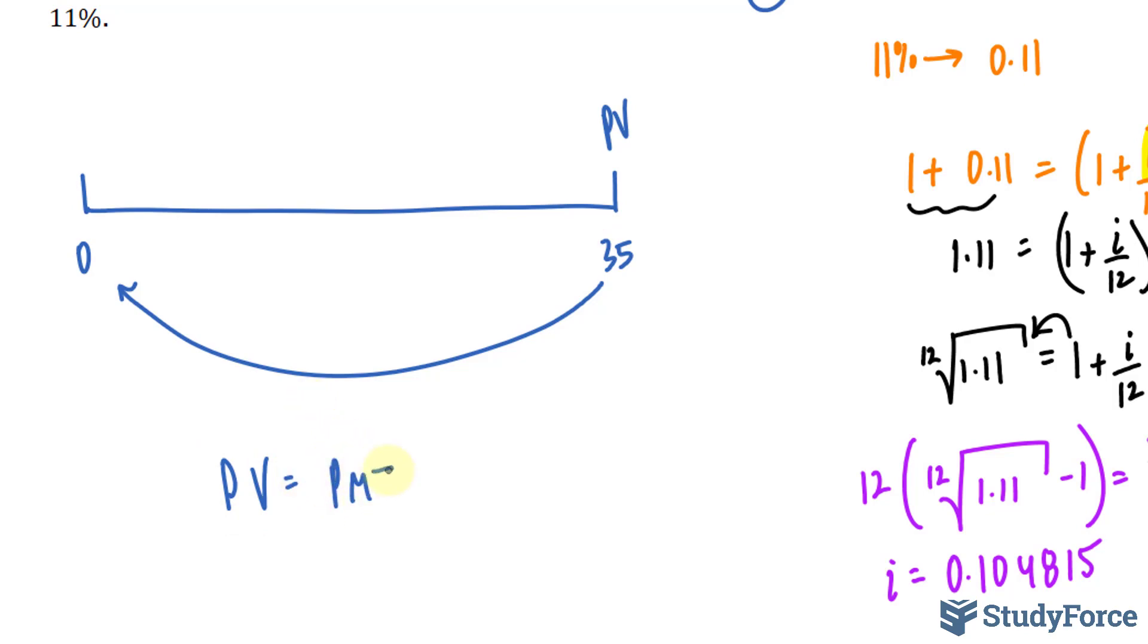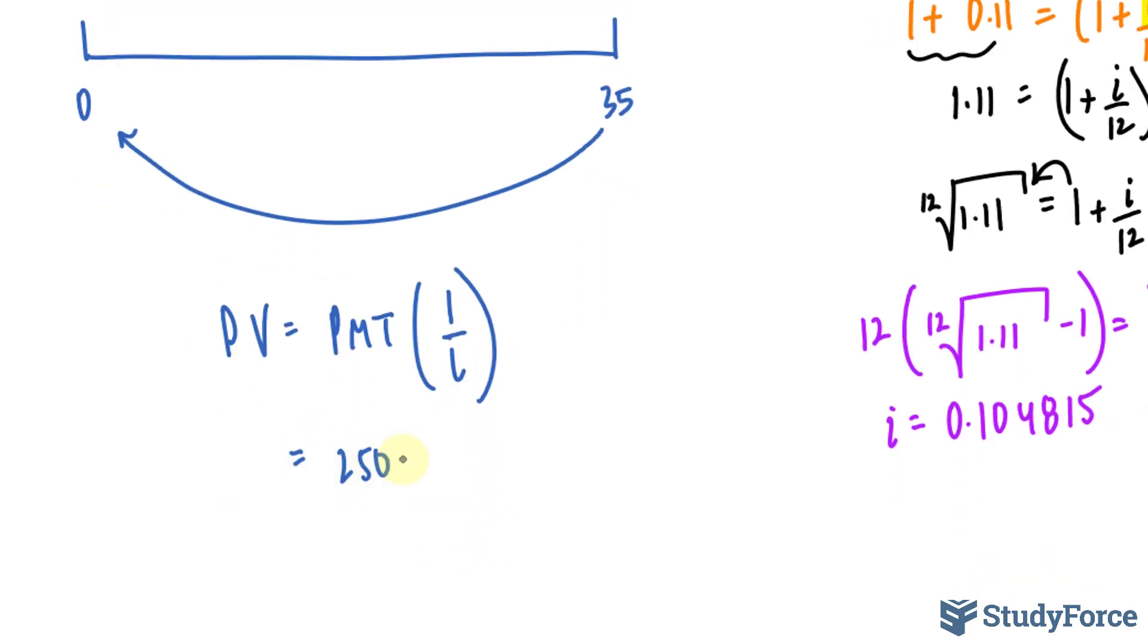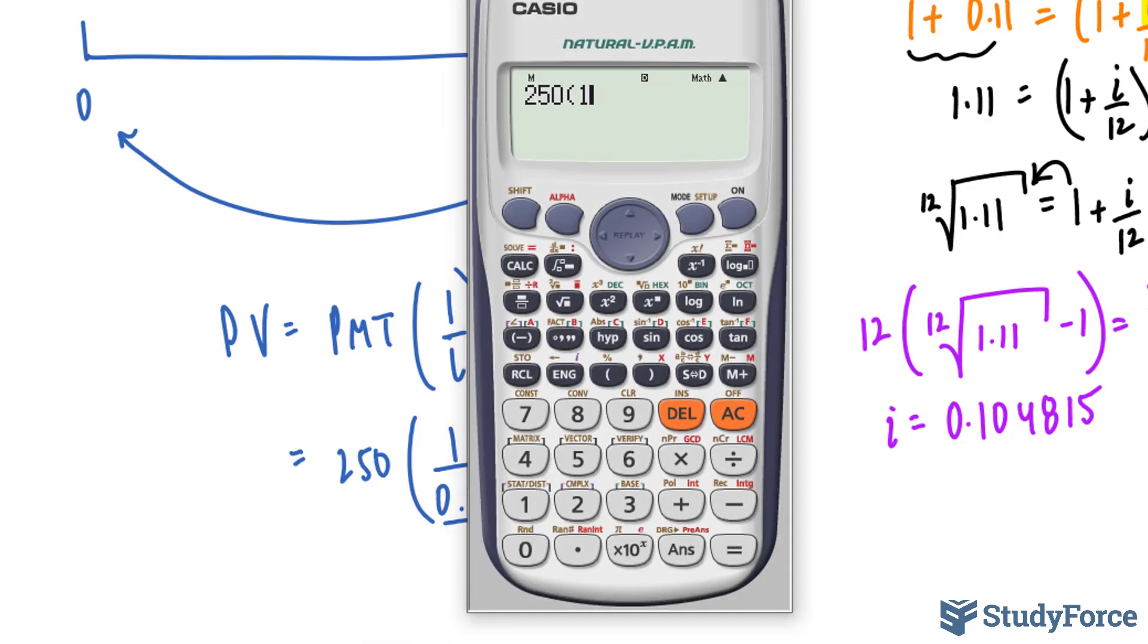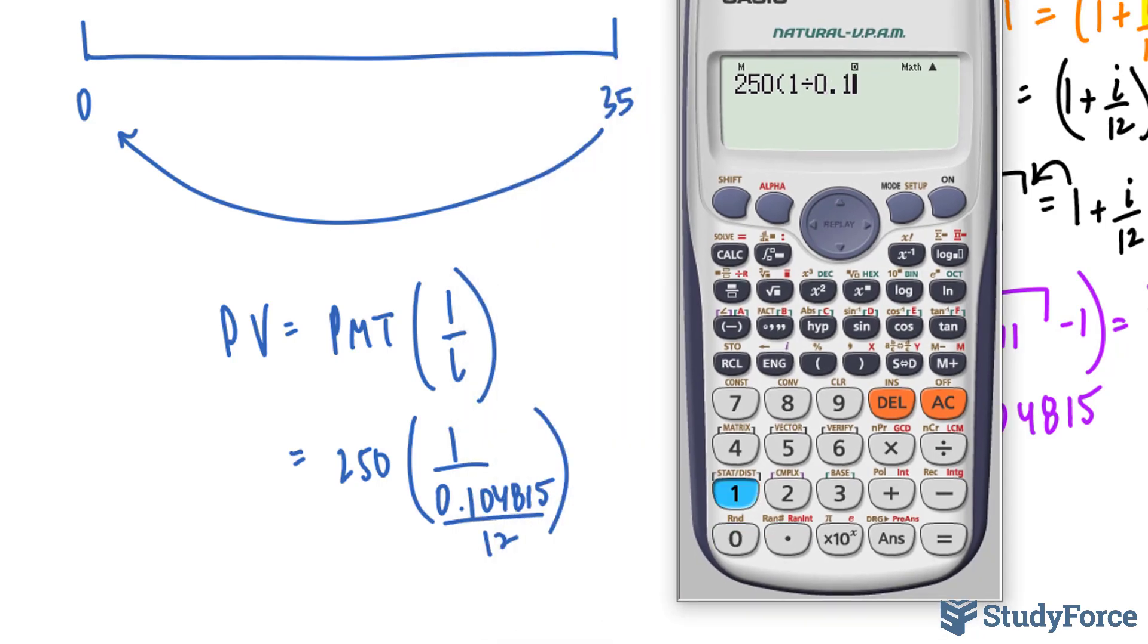So if I find the present value of the perpetuity at 35 months, I'll use the formula PMT times 1 over i. Our payments are 250, 1 over, and we'll take this value of 0.104815, and we'll divide that by 12, because there are 12 periods in one year, 12 months. So I have 250 times 1 over 0.104815 divided by 12. And you can put that in parentheses as well.